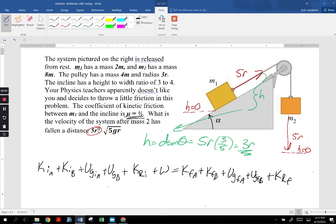And then you have k final for each mass, and you have gravitational potential for each mass, and what else we got? Sorry, I'm going faster than I can write. UG final for mass A plus UG final for mass B plus k rotational final. Okay, this is a lot to write out, and some of you may be professionals at this point and not feel the need to write this out.